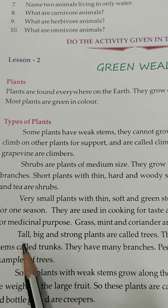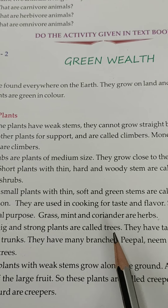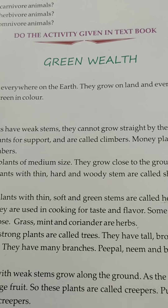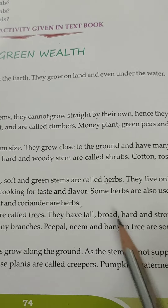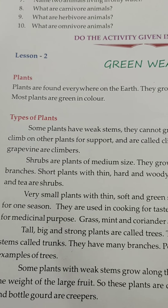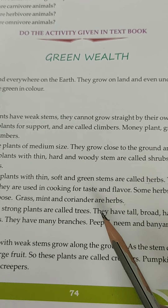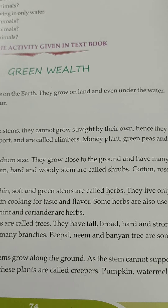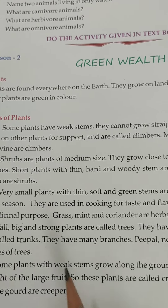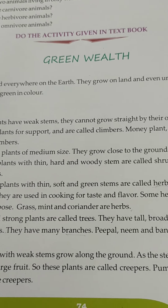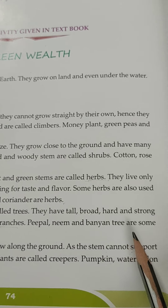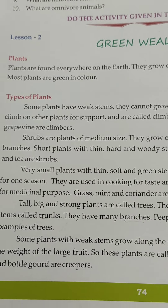Tall, big, and strong plants are called trees. They have tall, broad, hard, and strong stems called trunks. They have many branches. For example, peepul, neem, and banyan tree are some examples of trees.